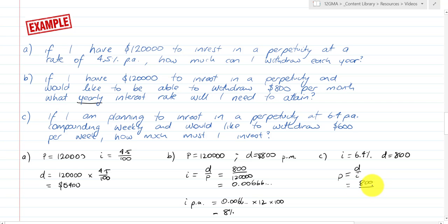P equals D over I, which equals 800 divided by 6.4 over 5200, because we have 6.4% per annum but it's compounding weekly and I'd like to withdraw $600 per week. We have to make sure our time units are correct.